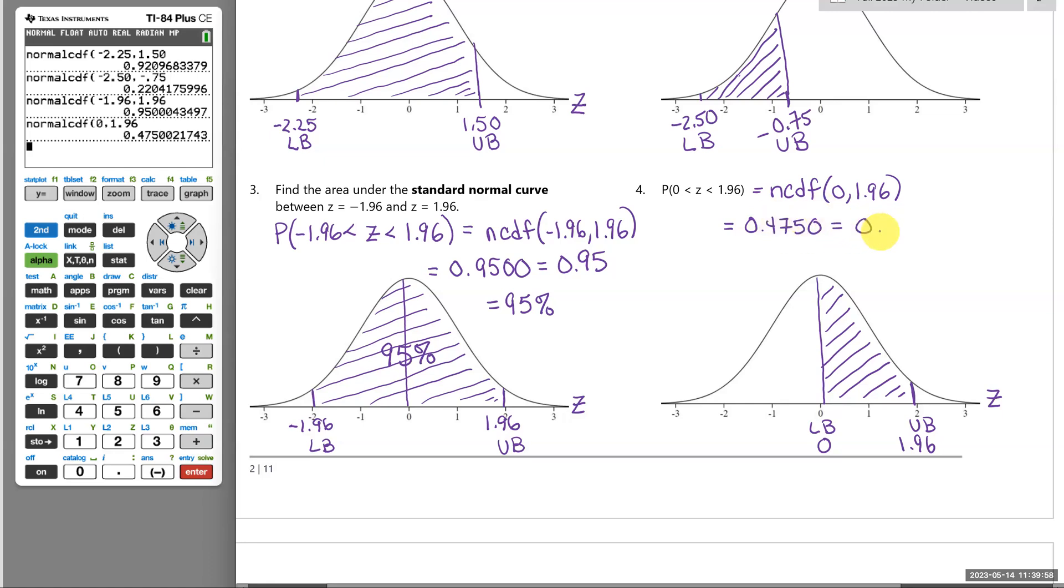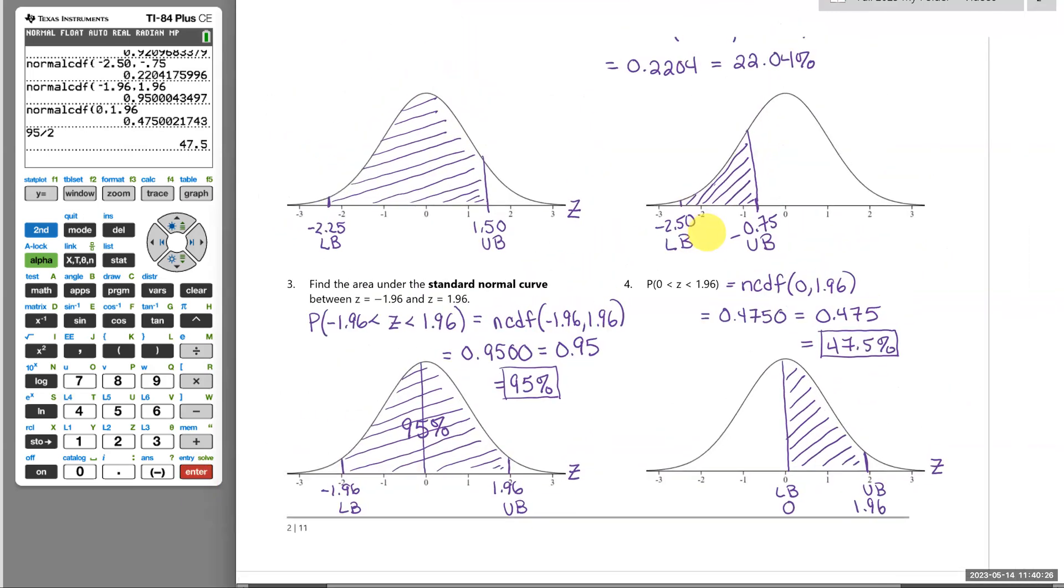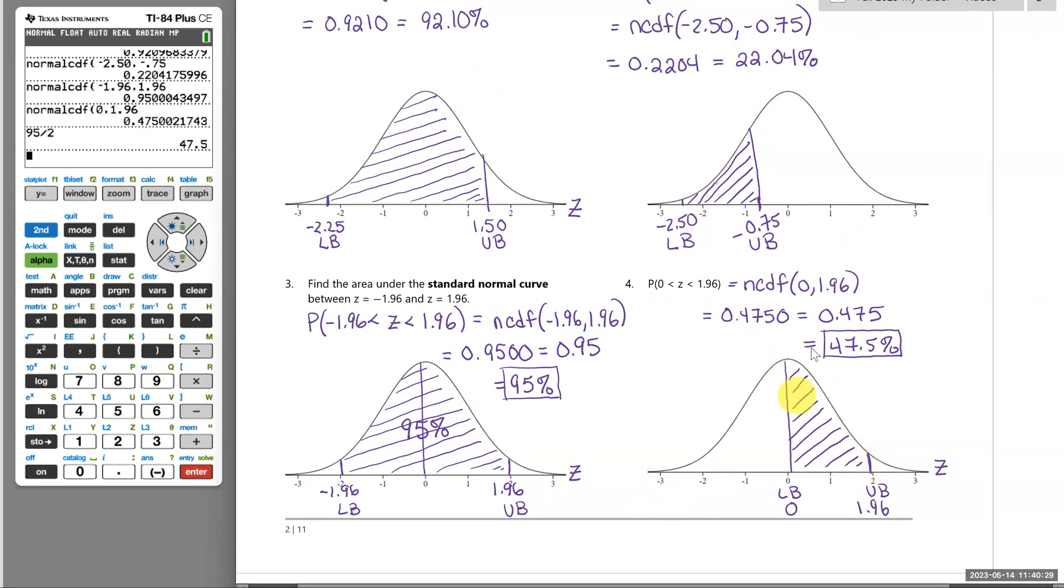And that is 0.4750. Just for the purposes of this example, I'm going to write three decimal, so 0.475, and as a percent, that would be 47.5 percent. So in the first picture, the middle 95 percent was shaded, and then 47.5 percent is half of that. We could check: 95 divided by 2 is 47.5 percent. So that's just a good reminder that normal distributions are symmetric about their mean.